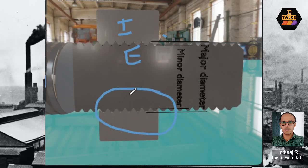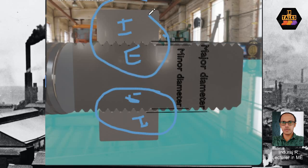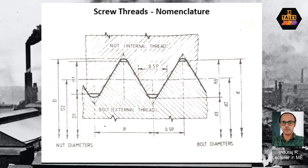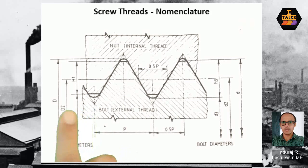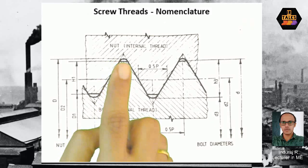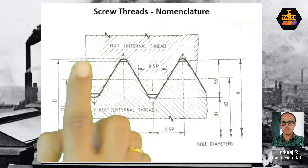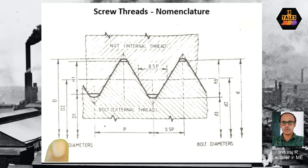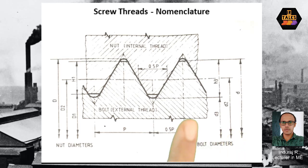In the assembly, we add the external thread and internal thread notation. Capital D is the major diameter of the internal thread. Double arrows indicate corresponding dimensions. The dimension lines show corresponding points between the nut and bolt.